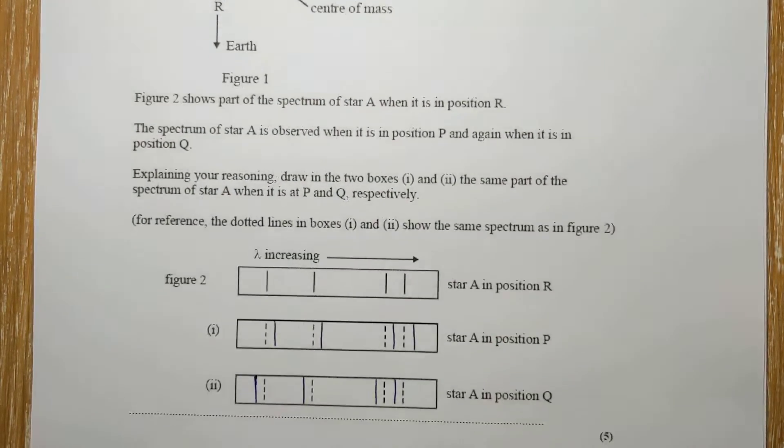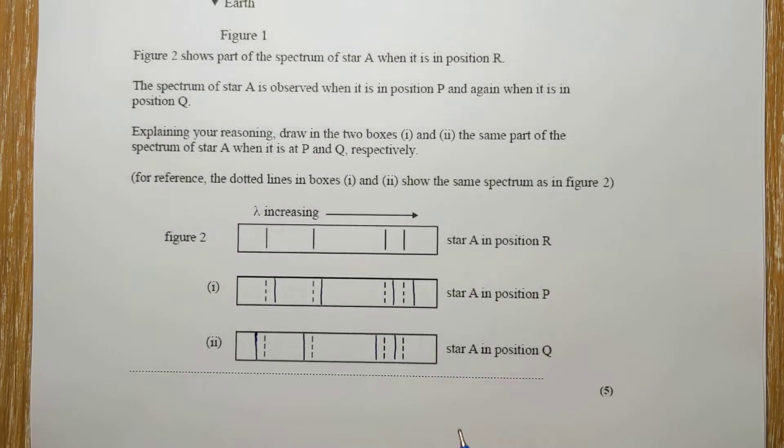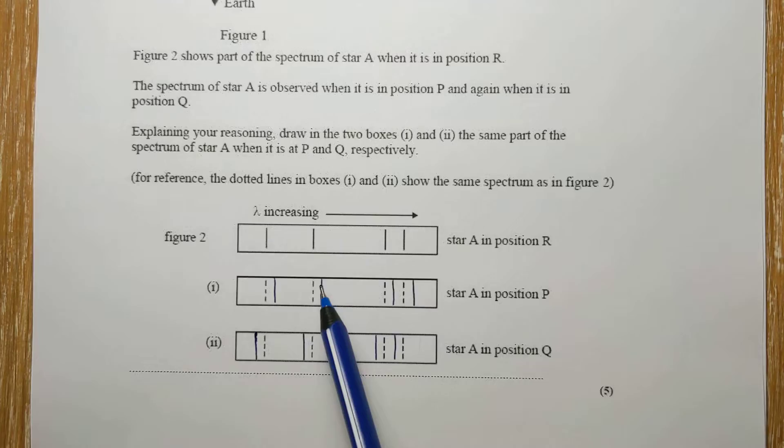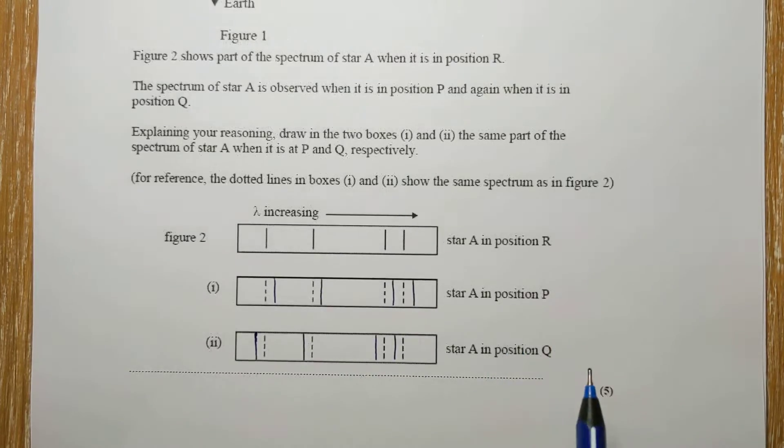Okay, and so putting that onto the diagram, there we go. So at Q the wavelengths have got shorter and at P they've got longer.